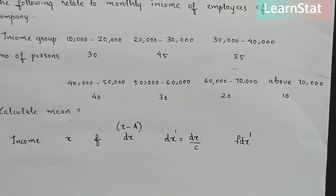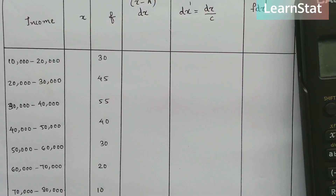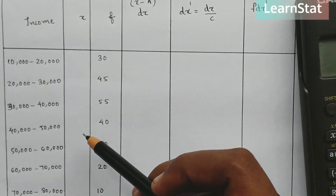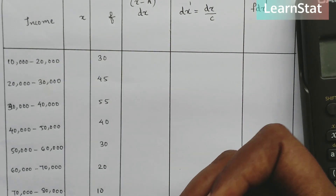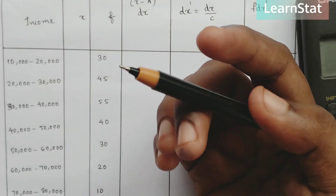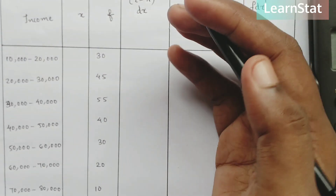The income class intervals given are: 10,000 to 20,000, 20,000 to 30,000, and up to 70,000 to 80,000.